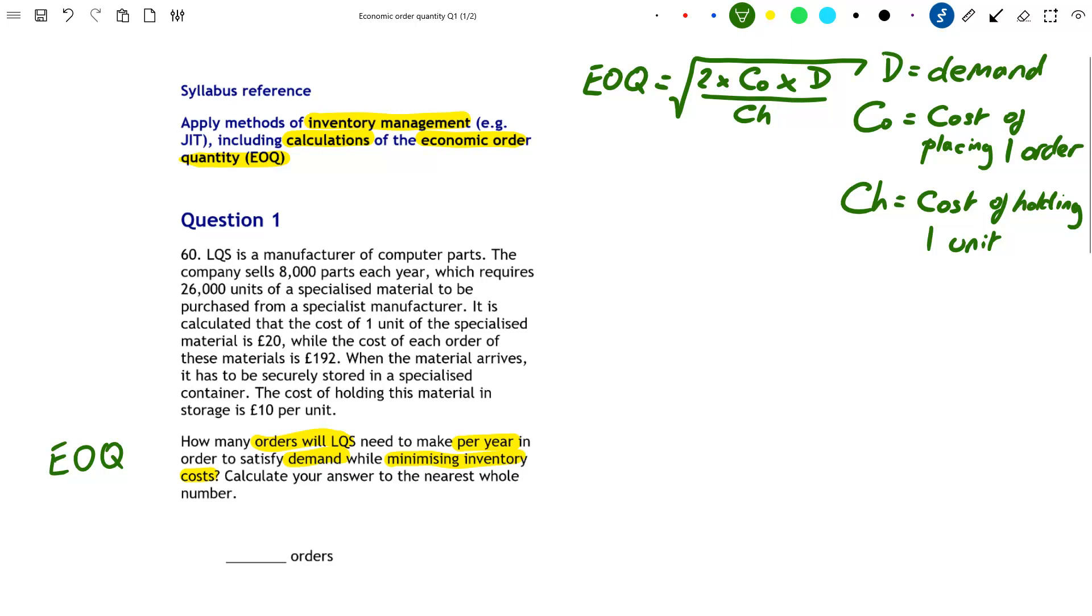Now let's look at the scenario and see if we can figure out which numbers relate to these three letters. The first sentence, LQS is a manufacturer of computer parts, is flavor text. It's nonsense, it's irrelevant to the question. The second sentence, however, does indicate to us what the demand is.